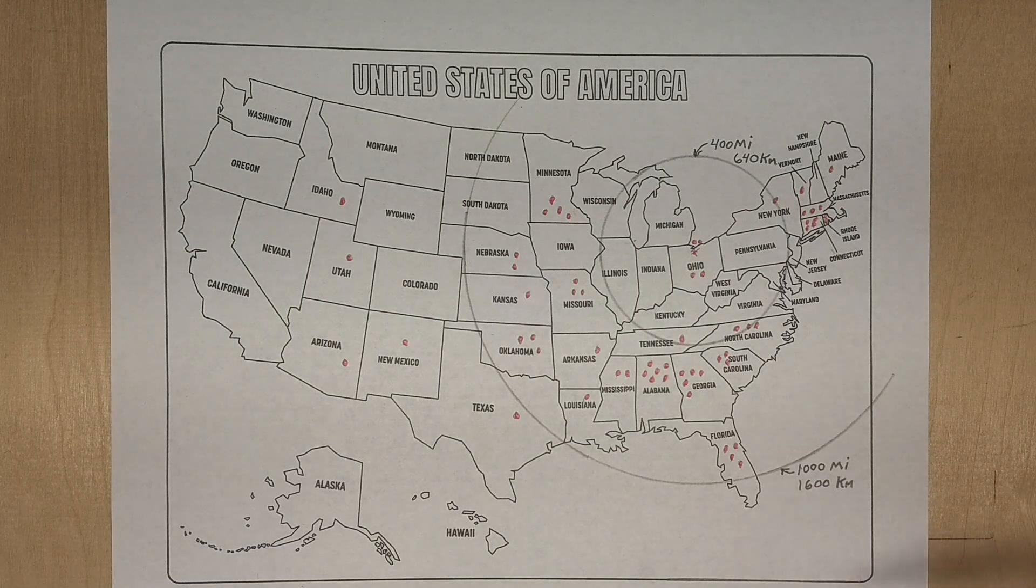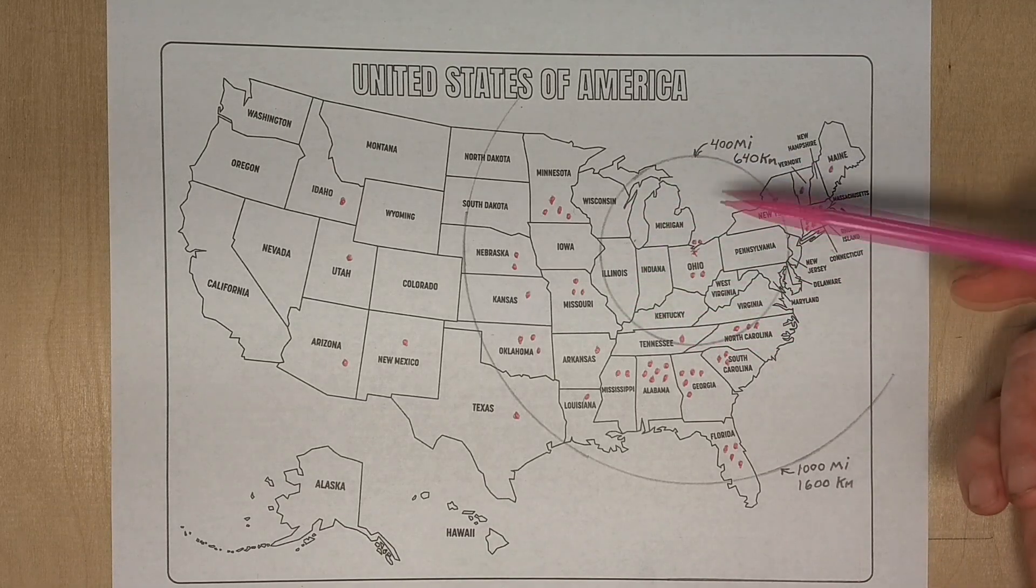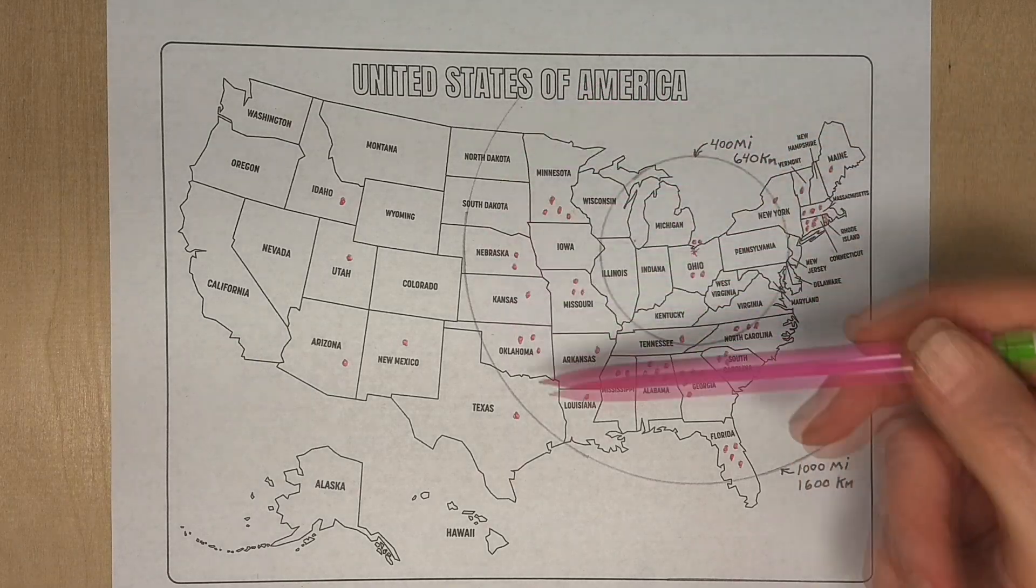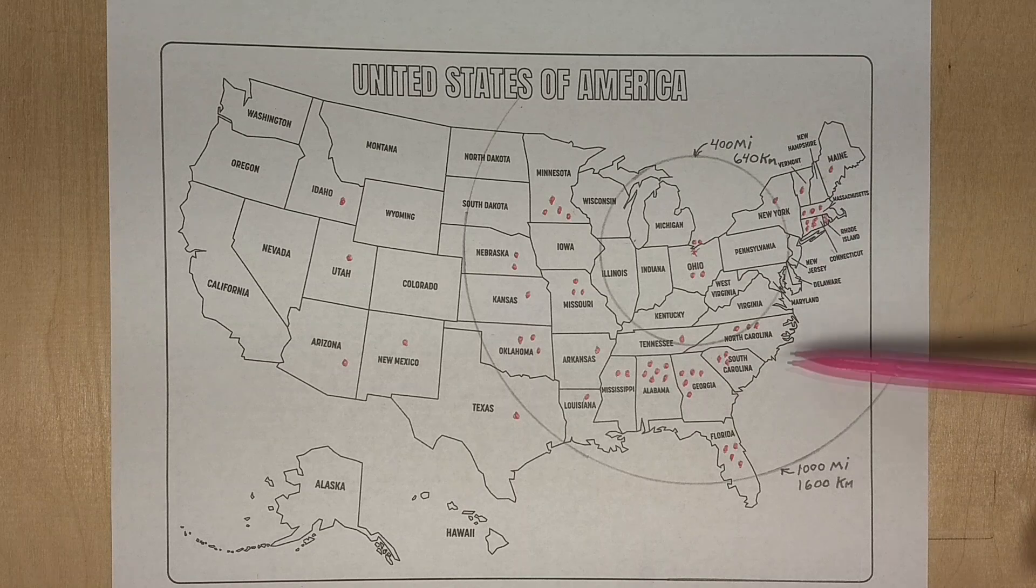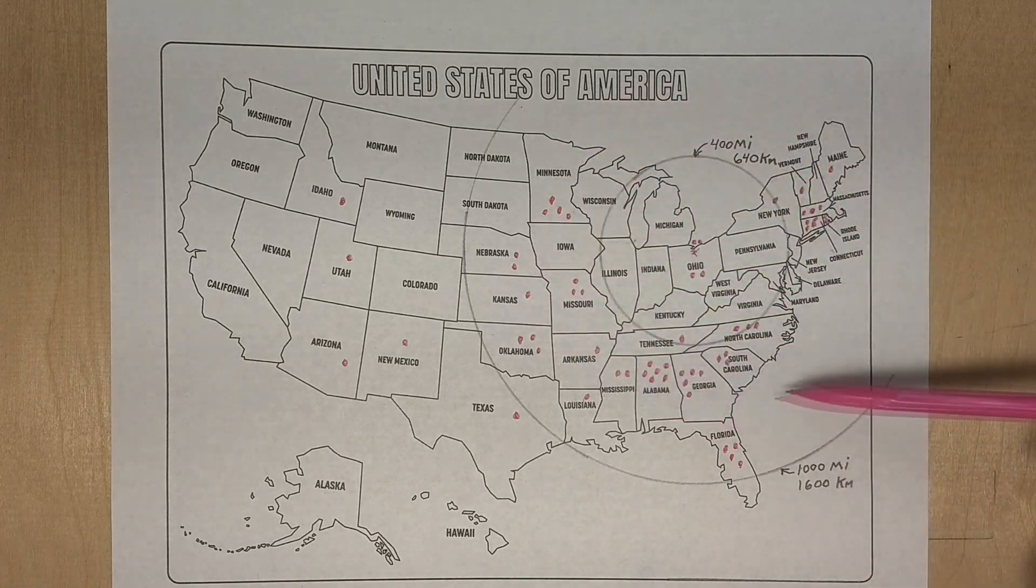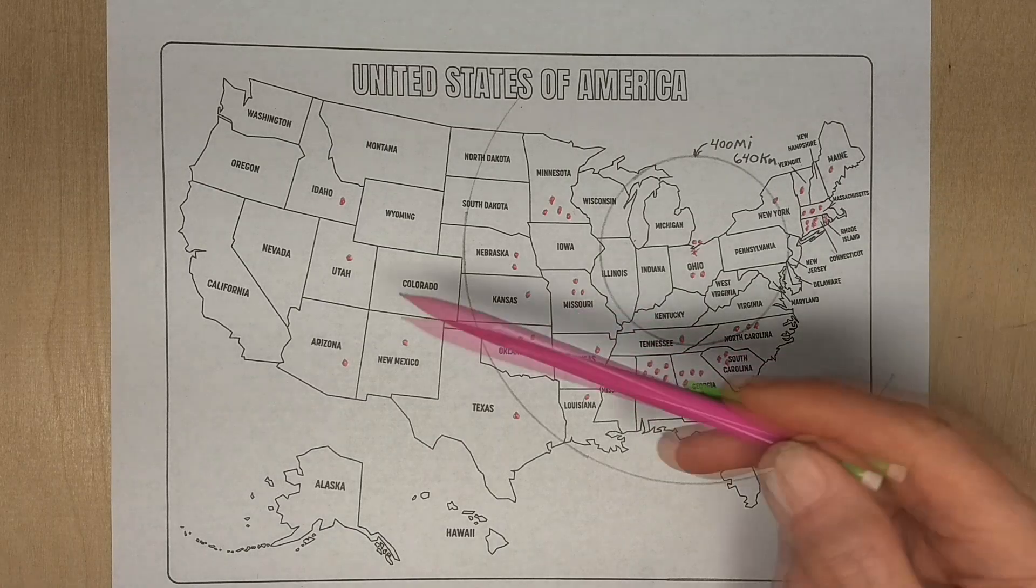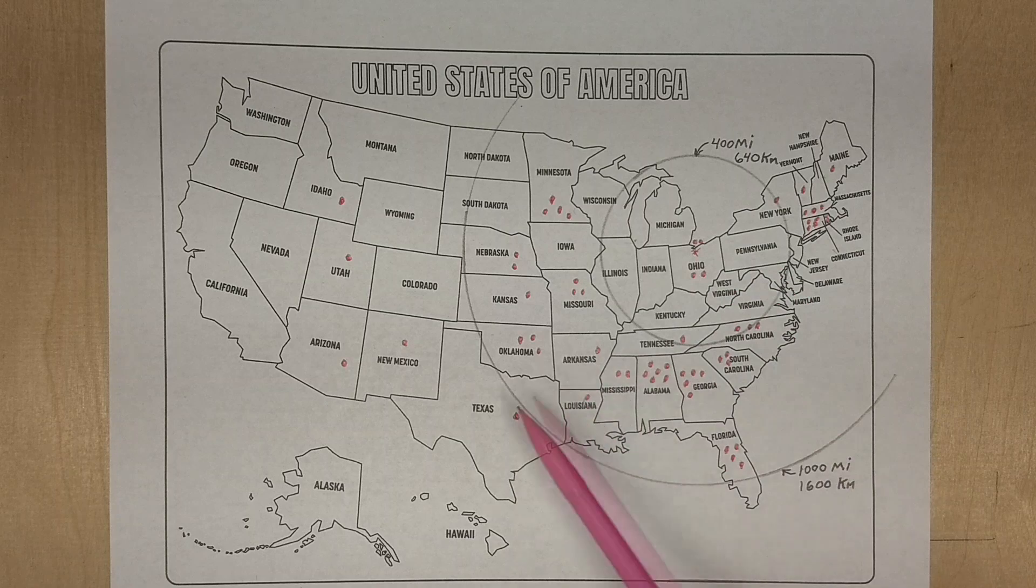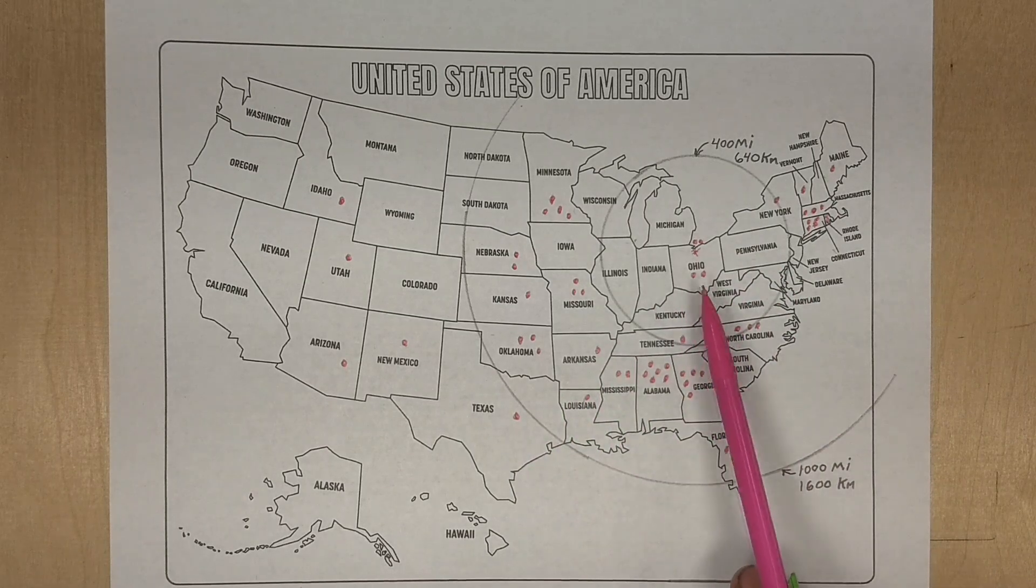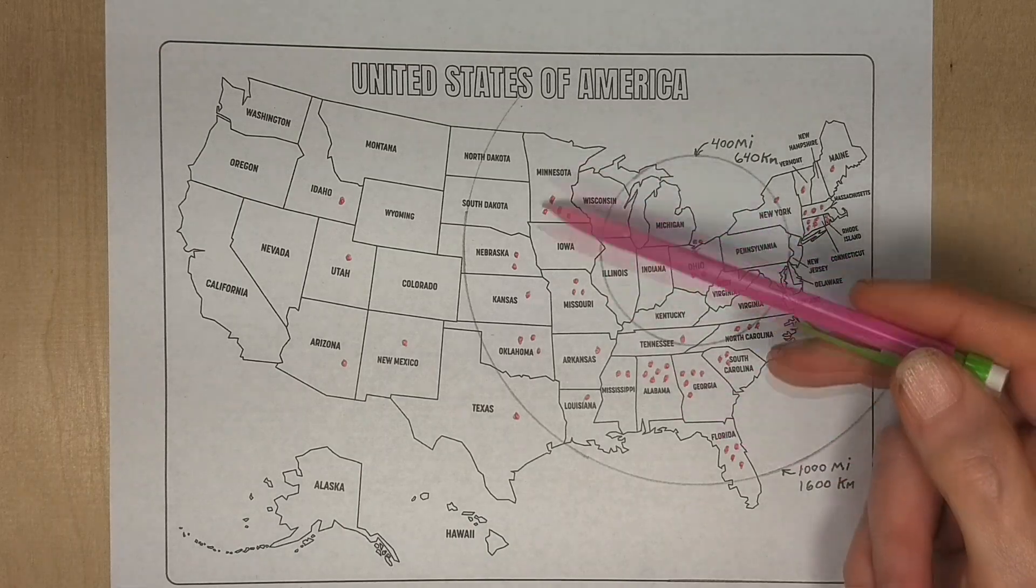Most of the contacts you can see. This circle is a 400 mile radius, and this circle is a 1,000 mile radius. You can see most of the contacts are within that range. And that's pretty close in for 20 meters. Now there's a few contacts way out here, and that's probably due to the second bounce.